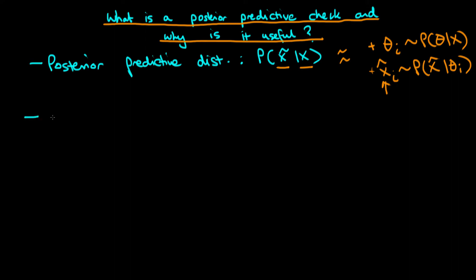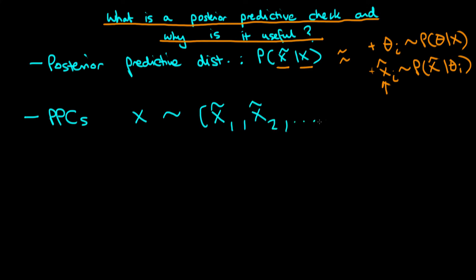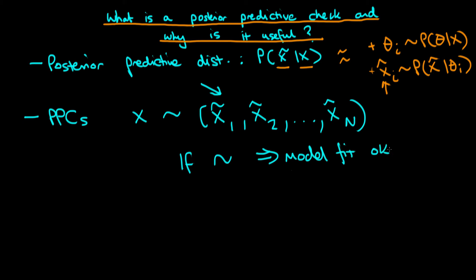The idea with posterior predictive checks, which we often abbreviate PPCs, is that we compare our actual data sample x with our distribution of all the different values of x-tilde that we've generated — x-tilde 1, x-tilde 2, and so on up to x-tilde n. If our model is fitting the data reasonably well, then these fake samples generated from our data generating process should encompass the true data we observe — it shouldn't look too different from the real data. If they do compare well, the model fit looks okay; otherwise we need to make some change to our model.